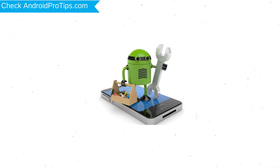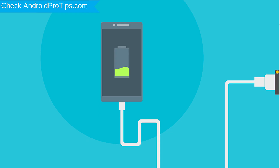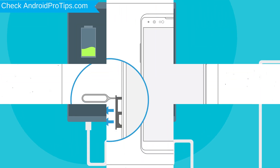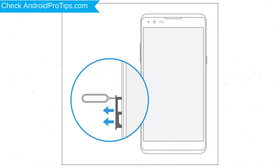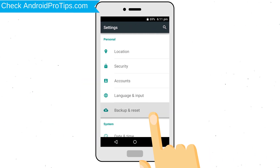Before resetting your mobile, your battery must be above 50%. Remove SD cards and SIMs, and backup your Android mobile data if possible.